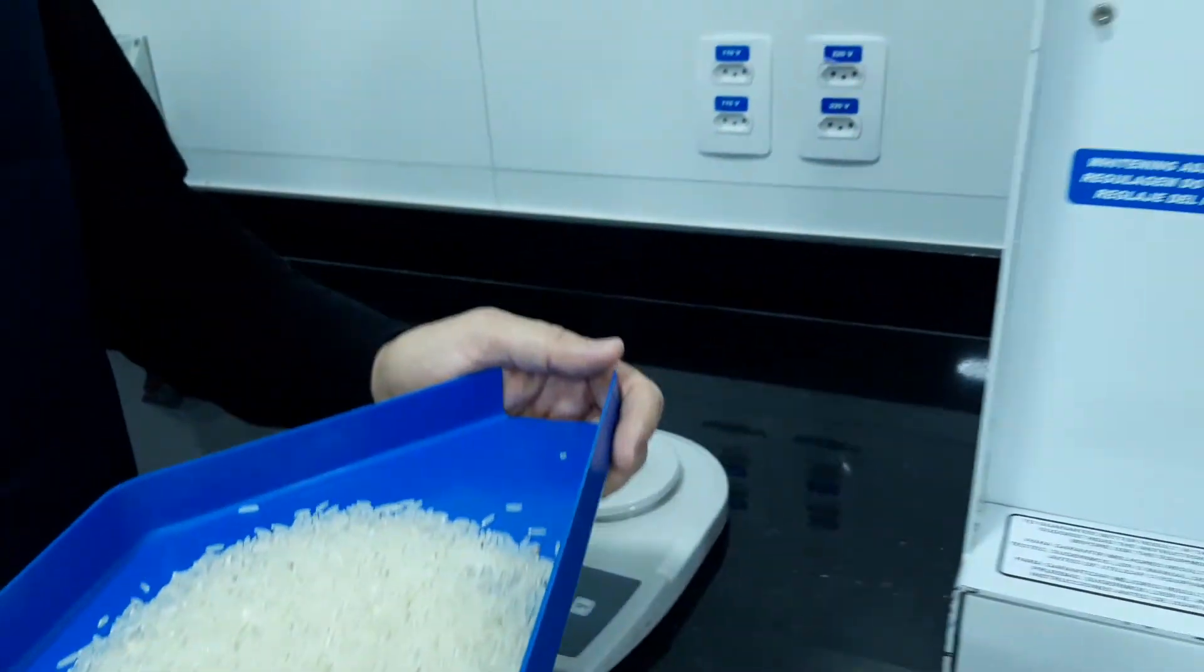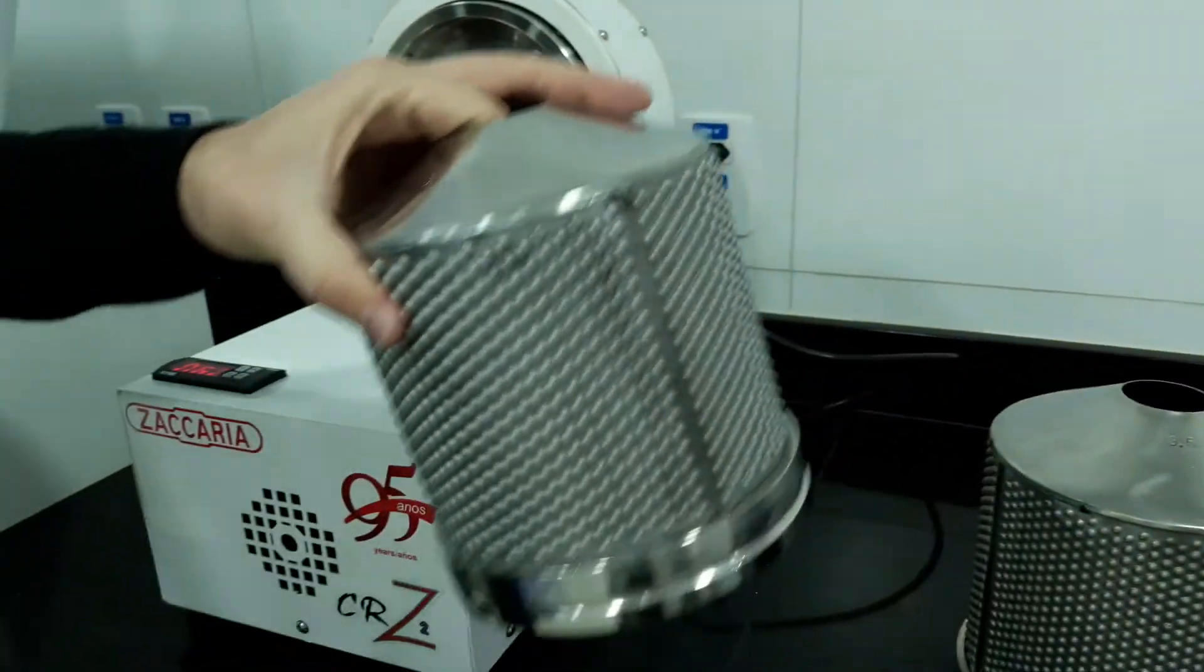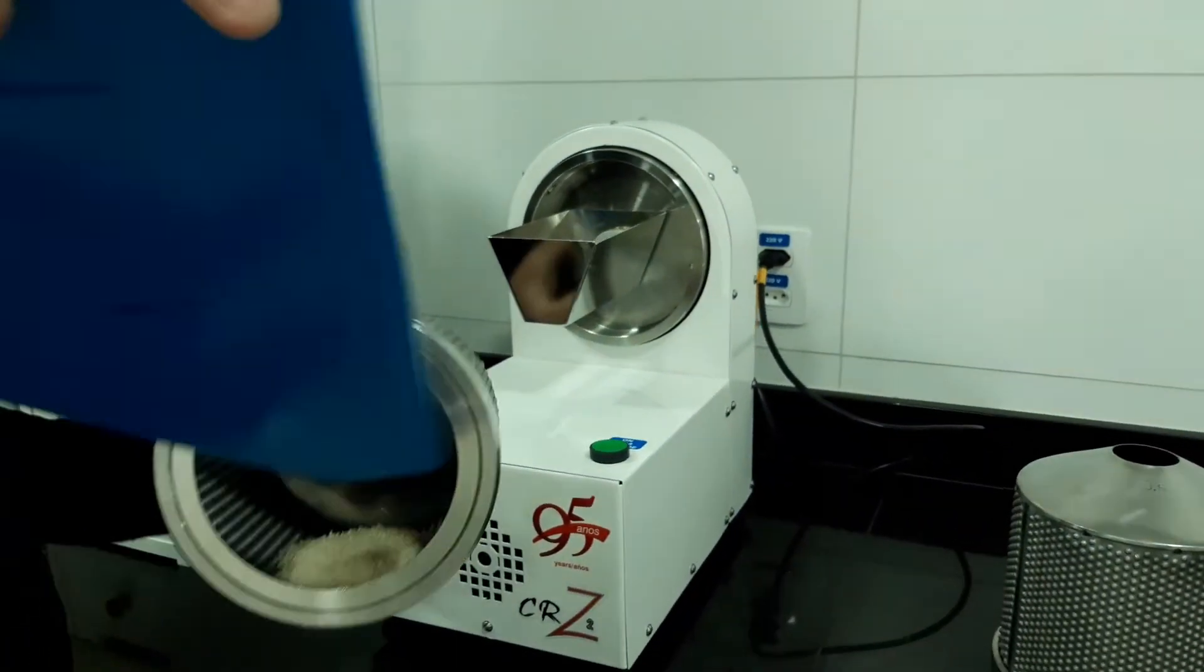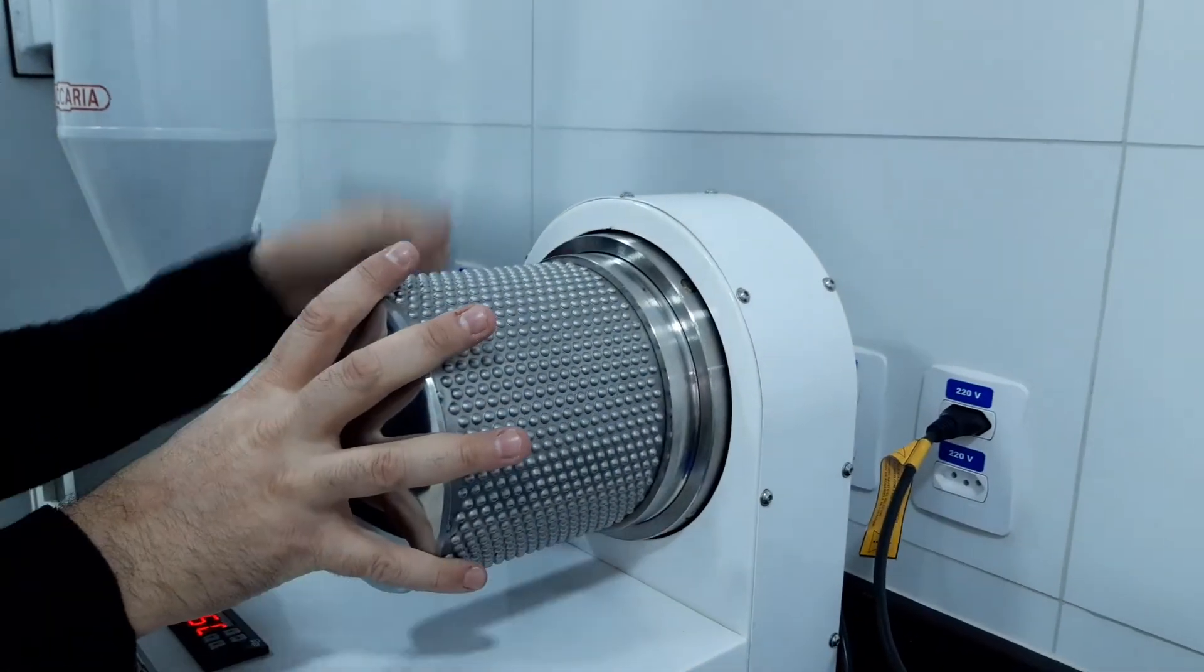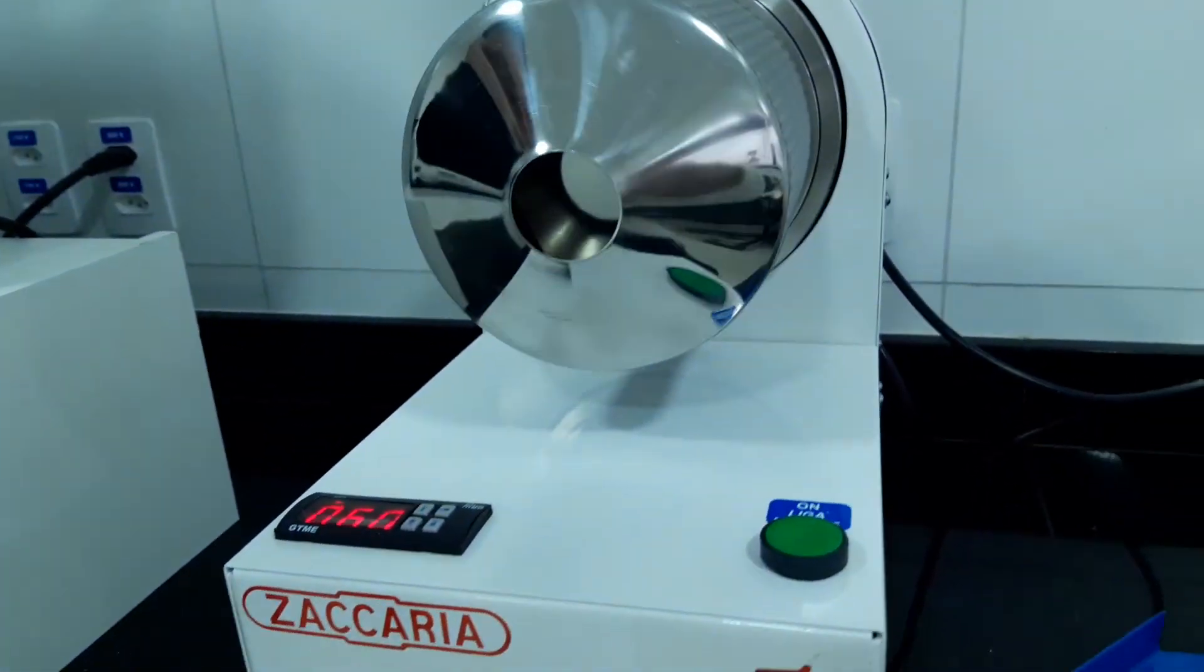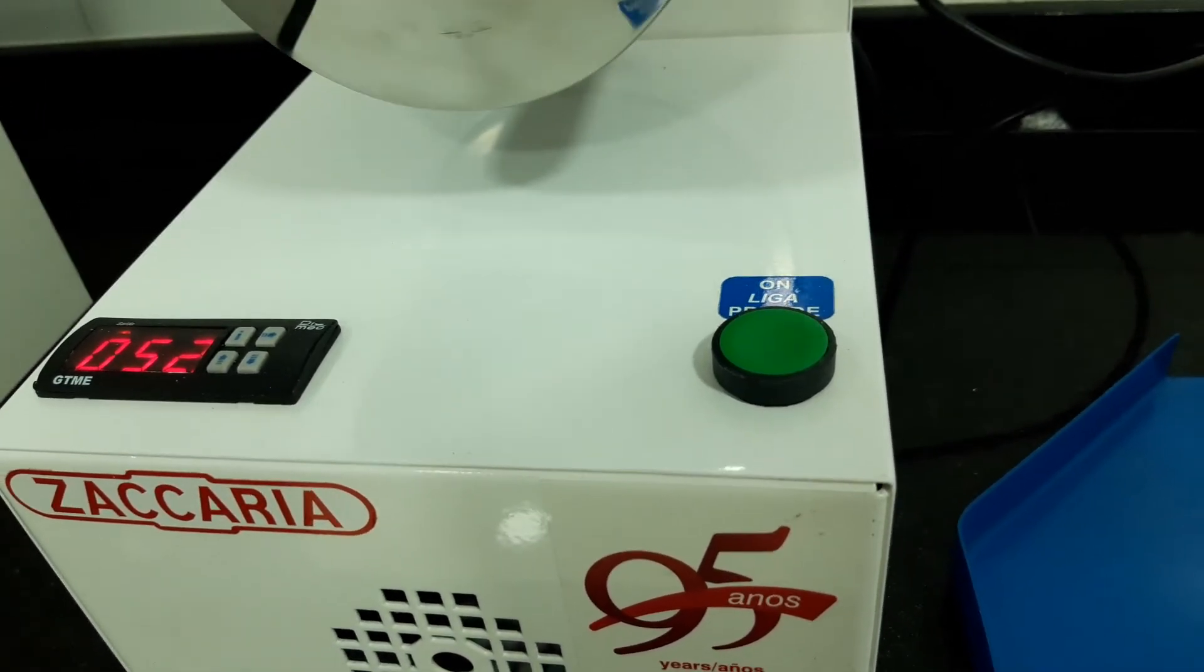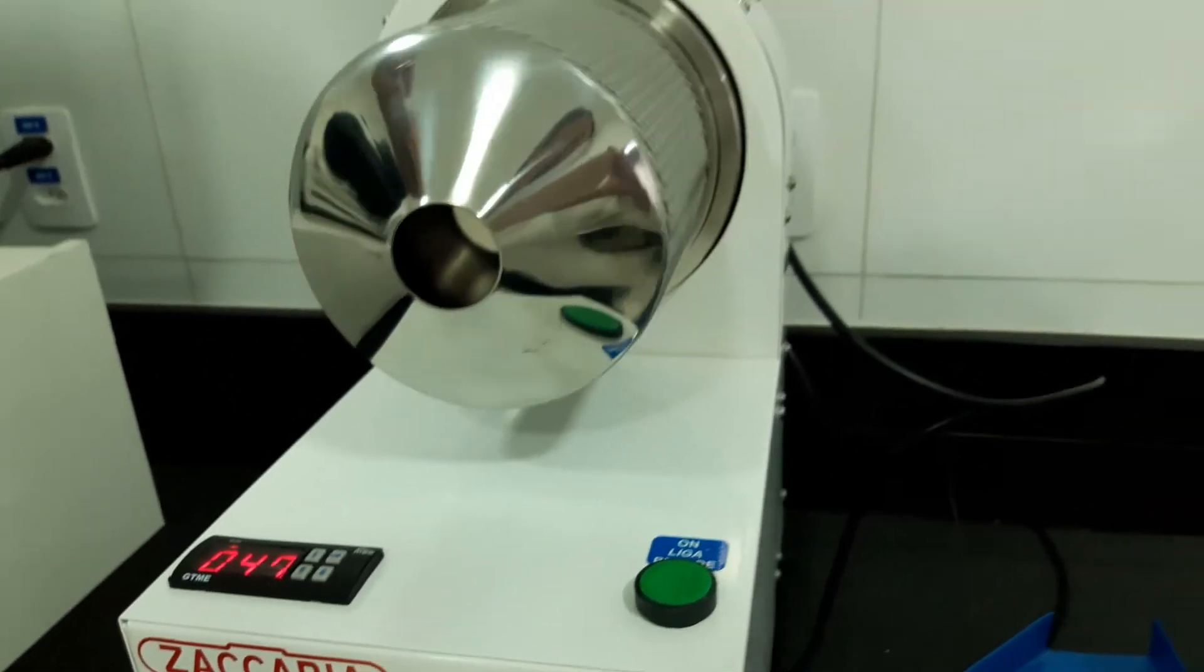And now we will measure the broken parts in the CRZ2, the length grader, with the cylinder of 4.5mm for the long range. We load the cylinder, connect the cylinder to the machine and it starts the classification. That is going to take 60 seconds to separate the broken rice from the whole grain.